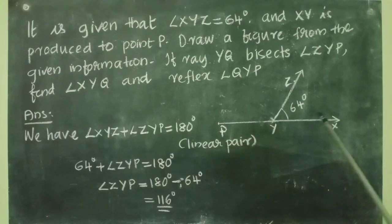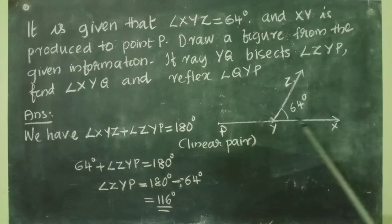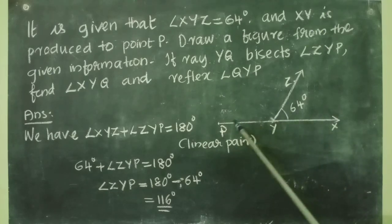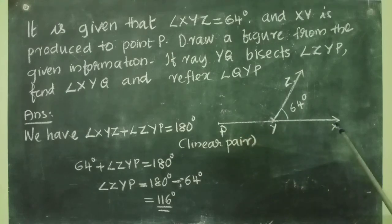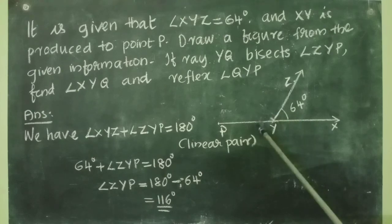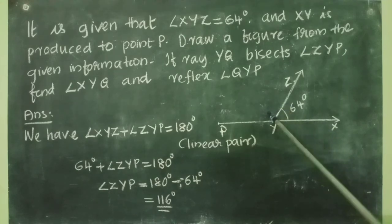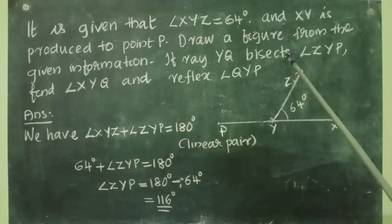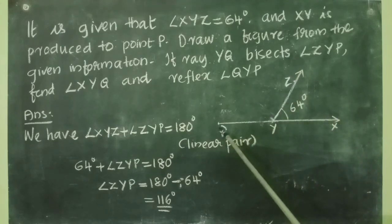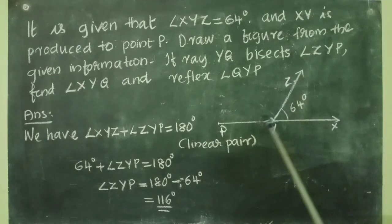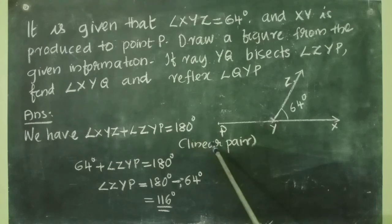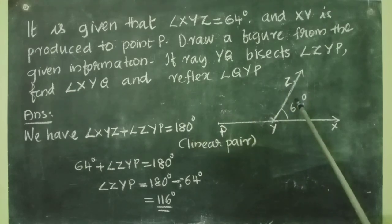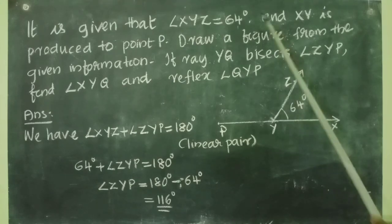Now let us discuss the answer. You can see angle XYZ and line PYX in the figure. PYX is a straight line, so there are two angles: ZYP and XYZ. Both are linear pair angles because they form a straight line. So we can write the sum of those two angles equal to 180 degrees. The angles are angle ZYP and angle XYZ.